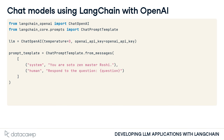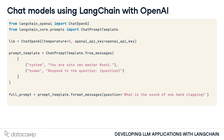Inside, we can provide messages to the different OpenAI chat roles, including System, Human, and AI. Similar to the standard PromptTemplate, input variables are marked using curly brackets. Finally, inputs can be passed to the template using the FormatMessages method.